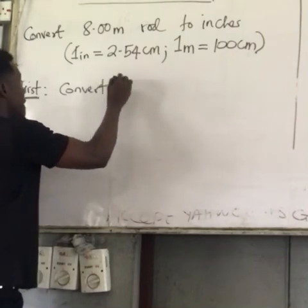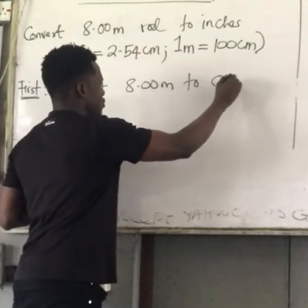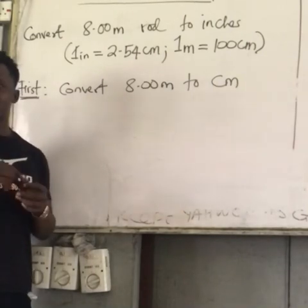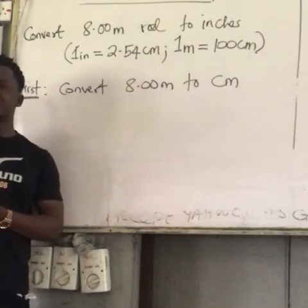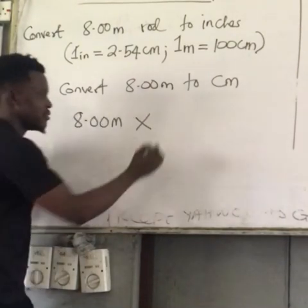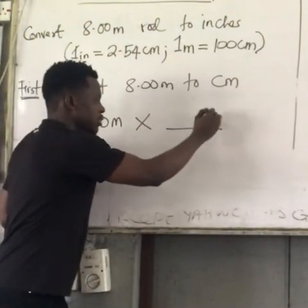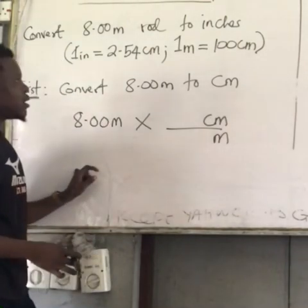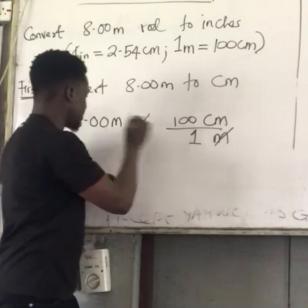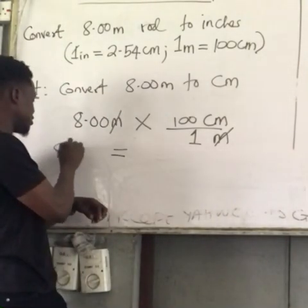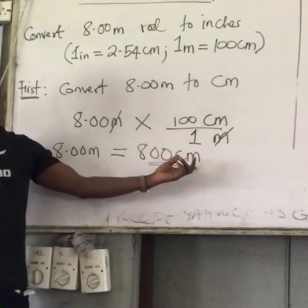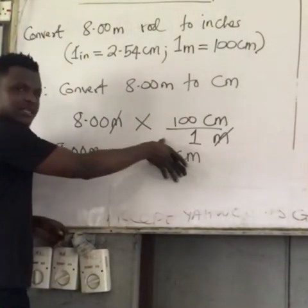First, convert 8.00 meters to centimeters. Using the conversion factor method: 8.00 meters × (100 cm / 1 meter). Meters cancel, giving 800 centimeters. But I was not asked to stop at centimeters — I was asked to stop at inches. So I take this result and proceed to inches.